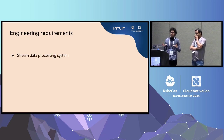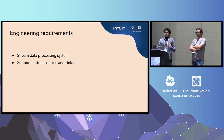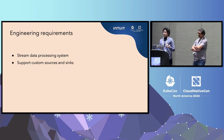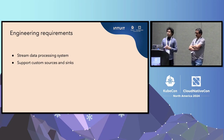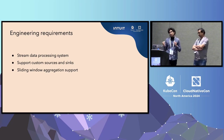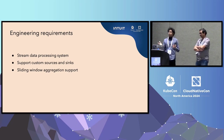From the engineering standpoint, the whole system is real-time, so there needs to be a streaming data processing system. It needs to support custom sources and sinks — for example, getting data from Prometheus or Thanos as a custom source, and sending data out to Wavefront or back to Prometheus as a sink. The sliding window aggregation support is critical, because the model needs to be fed sequences of data to understand the underlying structure of the metric. If you just send it one data point, it cannot understand the time series patterns.